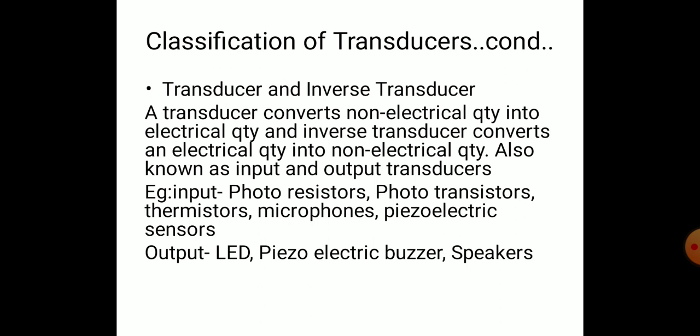A transducer converts a non-electrical quantity into an electrical quantity, while an inverse transducer converts an electrical quantity into a non-electrical quantity. Examples of transducers include photoresistors, phototransistors, thermistors, microphones, and piezoelectric sensors. Inverse transducers include LEDs, piezoelectric buzzers, and speakers. A microphone converts sound into an electric signal, while a speaker receives that electric signal and converts it back to sound — making it an inverse transducer.